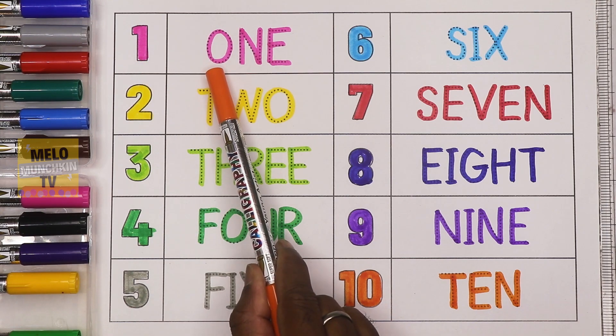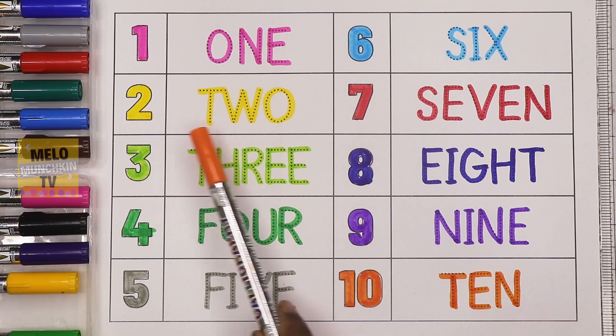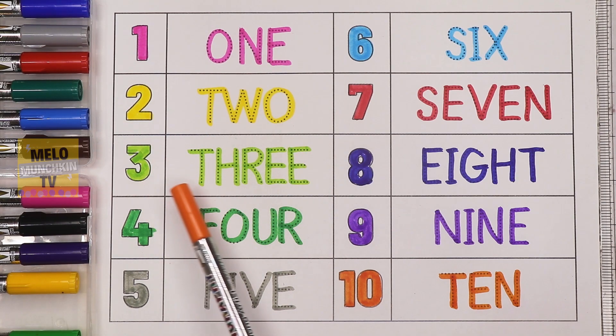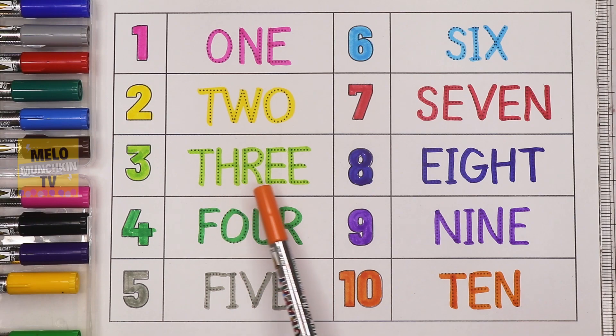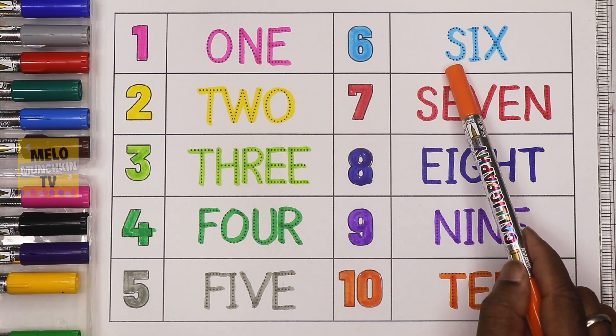One, O-N-E, one. Two, T-W-O, two. Three, T-H-R-E-E, three. Four, F-O-U-R, four. Five, F-I-V-E, five.